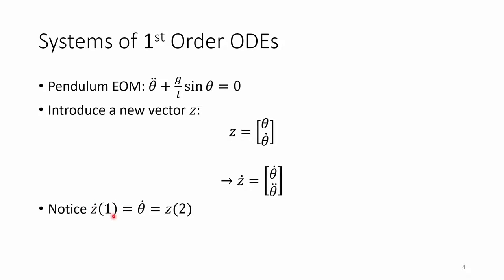Notice that Z dot of 1, or the first element in the Z dot vector, equals theta dot, which just equals the second element in the Z vector, Z of 2.